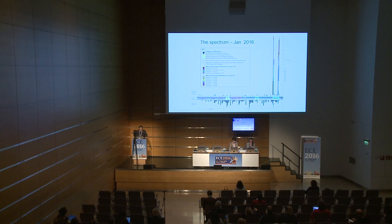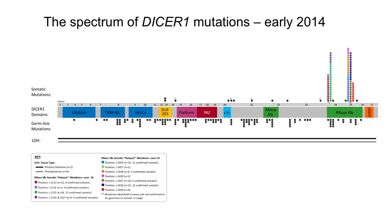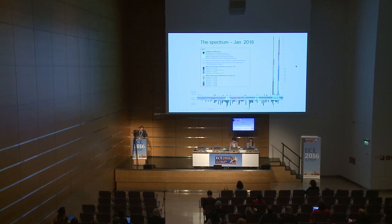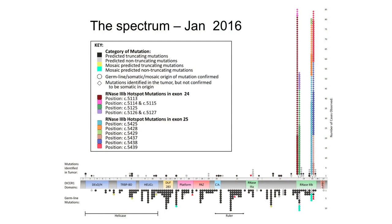There were six cases of LOH seen only in pituitary blastoma and pineal blastoma. What was interesting was that germline mutations were scattered along the gene, whereas somatic mutations were generally clustered in just these two regions — a very different pattern from the germline. Since then, essentially more of the same. Many more germline and somatic mutations have been added, all again in the same region.